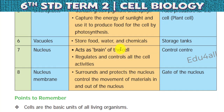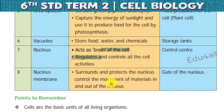Nucleus acts like a brain — it regulates and controls all cell activities. It is the control center. Nuclear membrane is a protective layer of the nucleus. It is a double membrane that controls the movement of cell material from inside and outside of the nucleus. The nuclear membrane acts for the nucleus the same way the cell membrane acts for the cell — it is the gate of the nucleus.